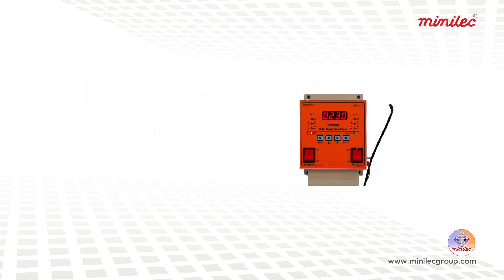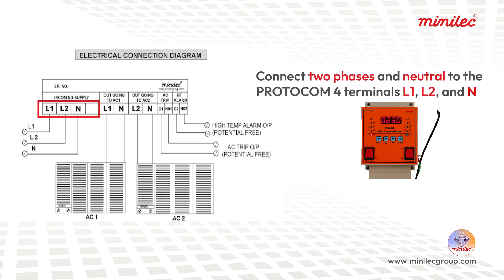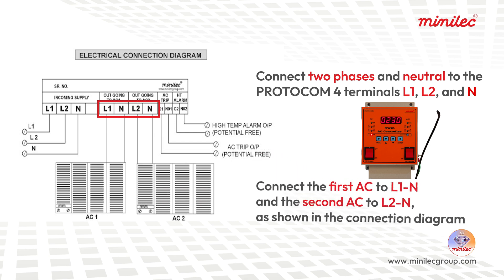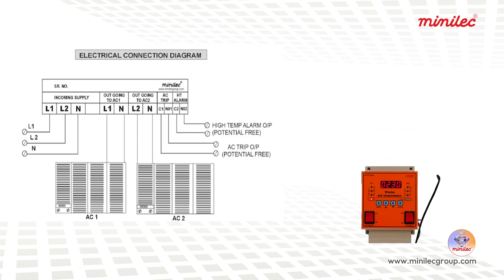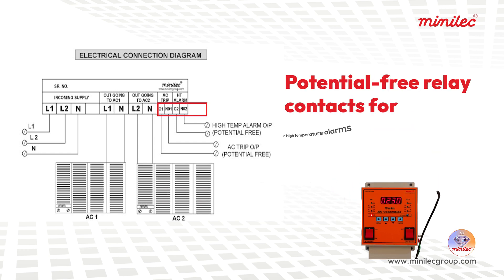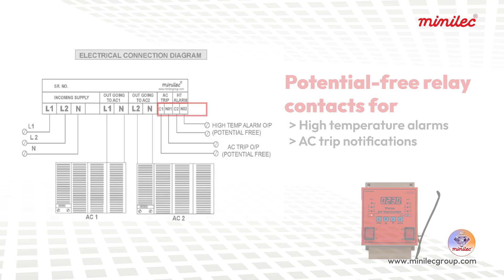To set up the device, connect two phases and neutral to the PROTOCOM 4 terminals L1, L2 and N respectively. Connect the first air conditioner to L1N and the second to L2N as shown in the connection diagram. Potential free relay output contacts are provided for high temperature alarms and AC trip notifications.